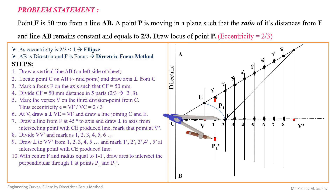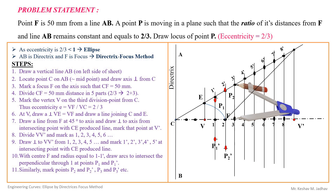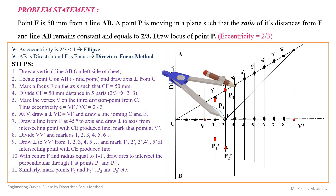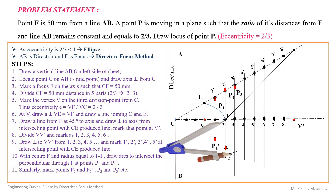Repeat this process for all points. Take distance 2–2', with focus as center, draw arcs on both sides of the axis to get points P2 and P2'. Take distance 3–3', focus as center, draw arc on both sides to get P3 and P3'. Take distance 4–4', center as focus, draw arc above and below the axis to get P4 and P4'.